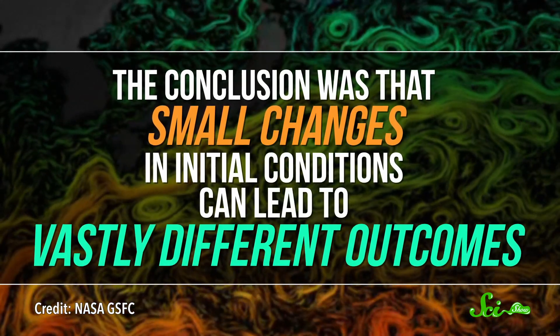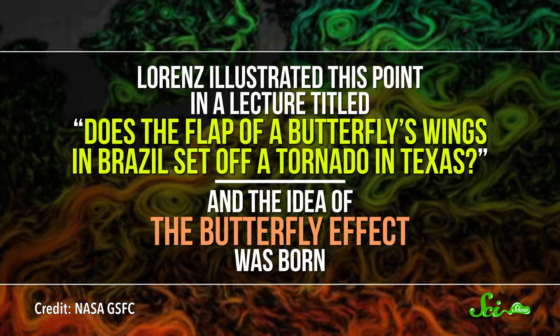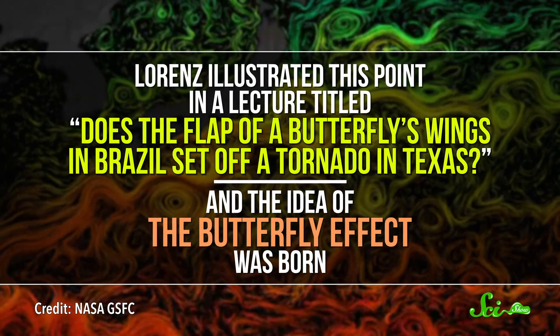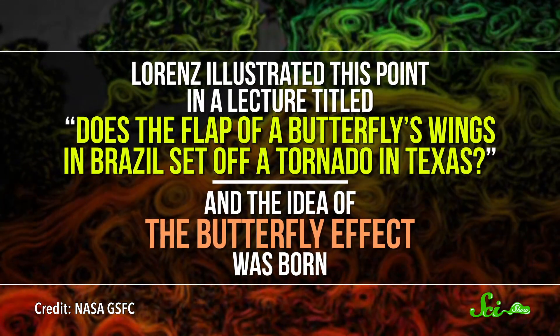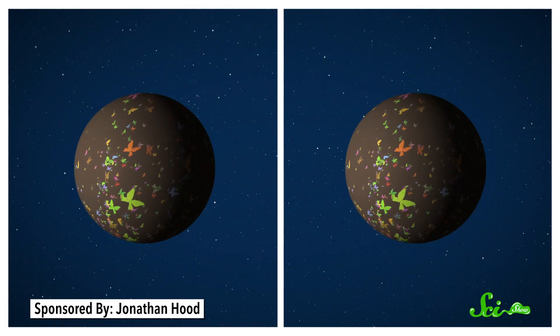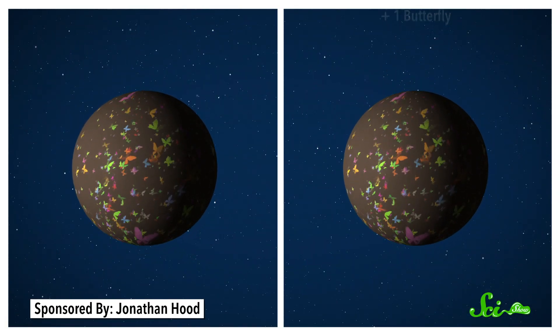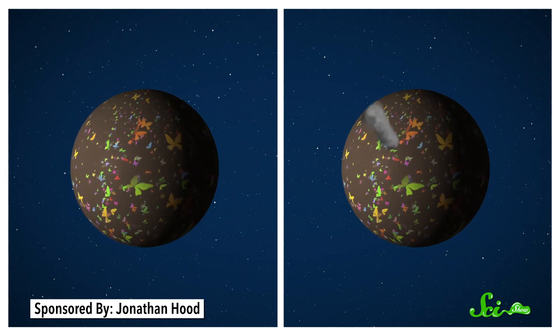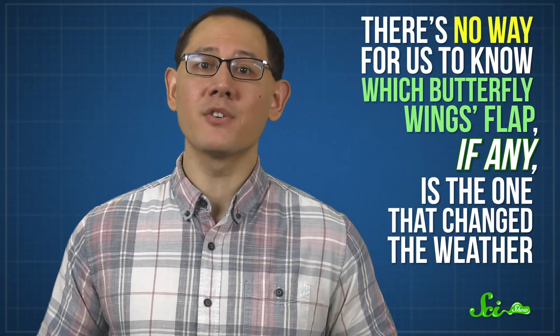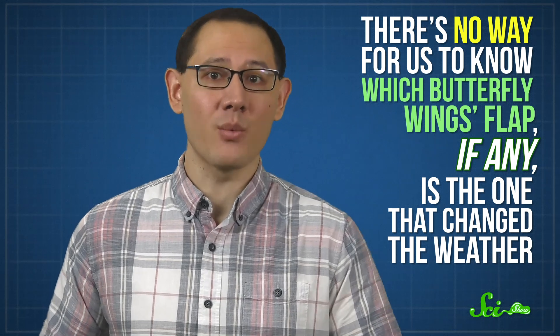The conclusion was that small changes in initial conditions can lead to vastly different outcomes. Lorenz illustrated this point in a lecture titled, 'Does the Flap of a Butterfly's Wings in Brazil Set Off a Tornado in Texas?' And the idea of the butterfly effect was born. But Lorenz was careful to not say extreme things like all tornadoes are caused by butterflies. All he said was that some small events can be instrumental in generating a tornado. If you imagine two planets identical except for one extra butterfly on one of them, it's technically possible that one planet will grow a tornado and the other won't. But there's no way for us to know which butterfly wings, if any, is the one that changed the weather — there are just too many tiny influences. And in fact, the butterfly is just as likely to prevent a tornado.